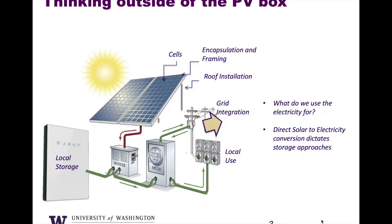This should be a familiar diagram by now — the advanced residential solar system, where we have our cells and modules feeding DC power into an inverter. That inverter converts it to AC in conventional systems, and that AC power can go through a smart meter and be partitioned out for local use, immediate use, or sent back into the grid. We also have the idea of local storage, which now in batteries would happen on the DC side of the inverter.